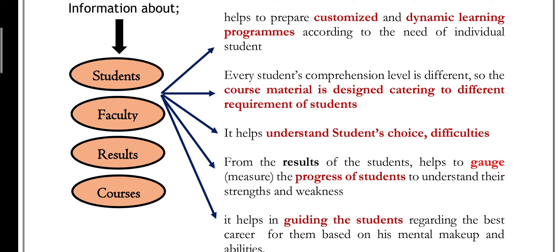Bachpan se ek bache ka academic data agar ho, toh students ki choices, difficulties, aur interest ko taul ke use sahi career advice di jaayegi. It is all possible because of big data. Big data mein record kiya hua student ka result data helps teachers and parents to evaluate the progress of the student, simultaneously understanding their strengths and weaknesses.